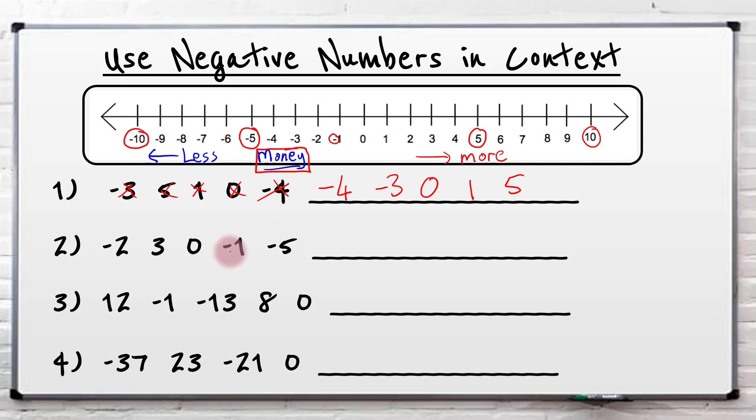So we've got minus five, minus one, zero, three, minus two. Well, I don't want to have minus five pounds. So that's my least. Then I would have minus two pounds or minus one. Then zero, because I don't owe any money then. That's good. And then this one, I've got a bit of money. I've got three. So think of it as money.